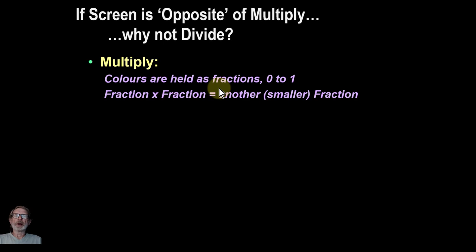And if you multiply a fraction by a fraction, you get another smaller fraction, which is great if you want to make something darker as you do with multiplying, because the smaller the number, the darker it is. So 0.6 times 0.3 gives you 0.18, which is going to be a smaller number, which can be a darker color.